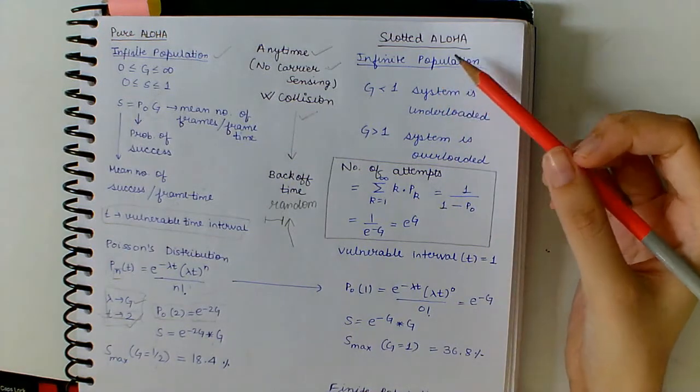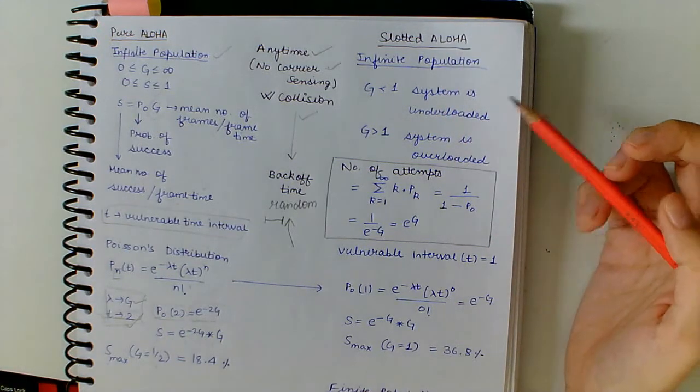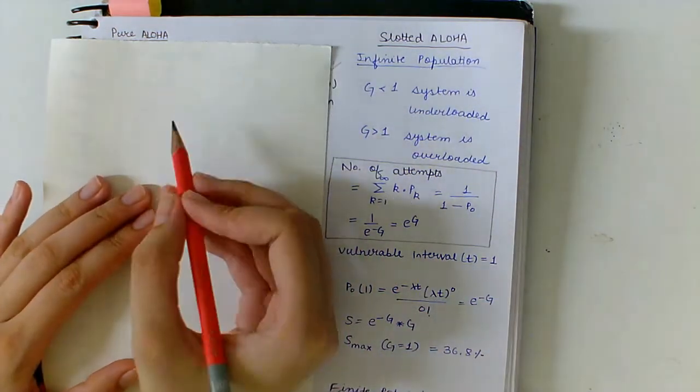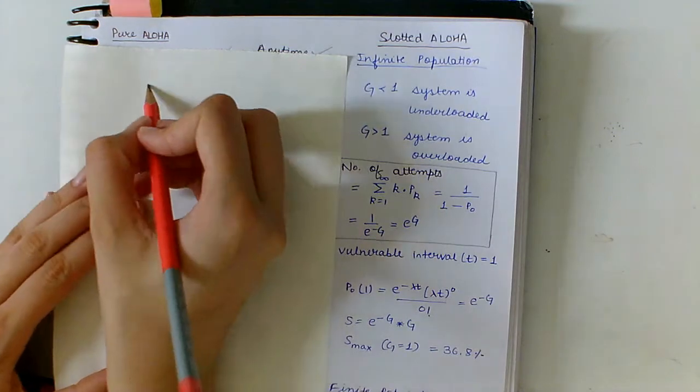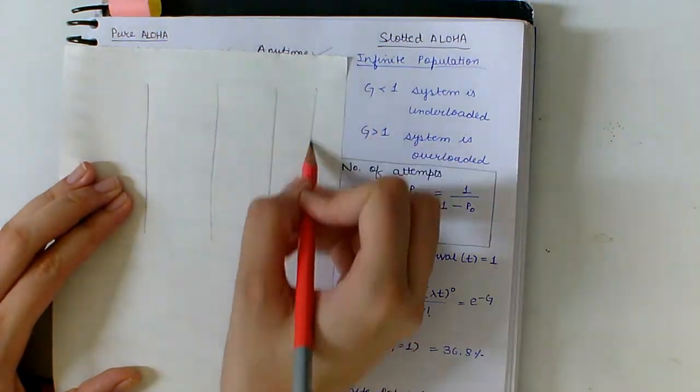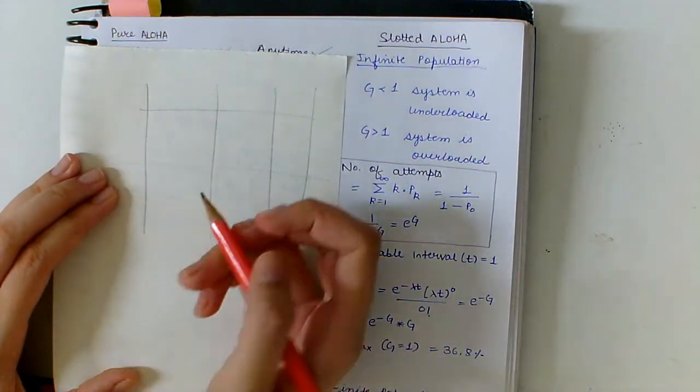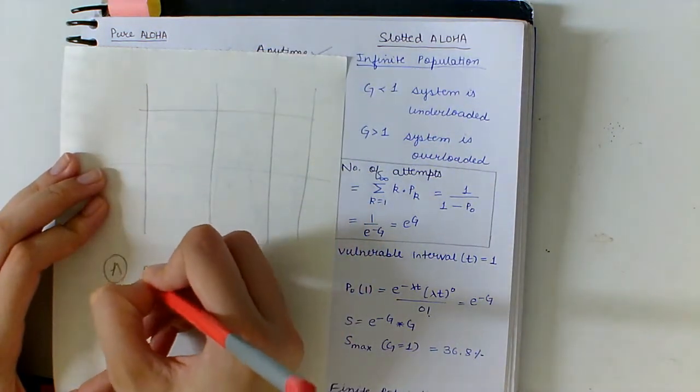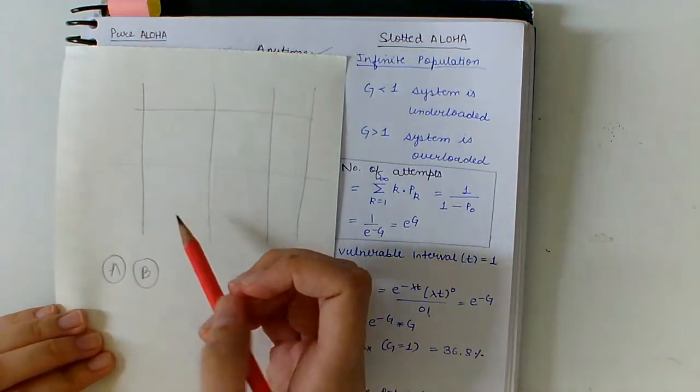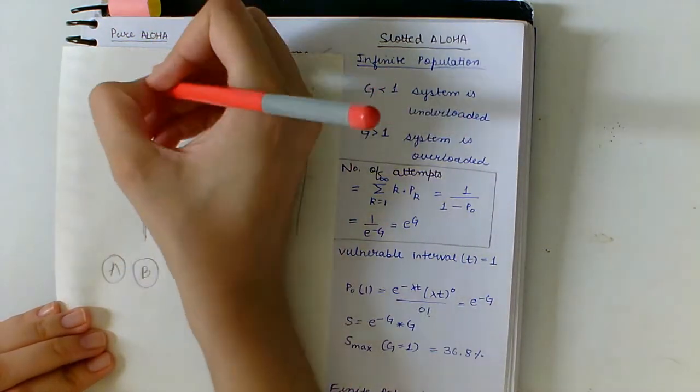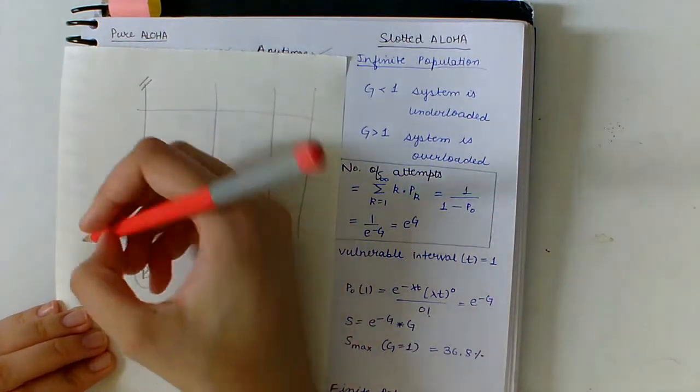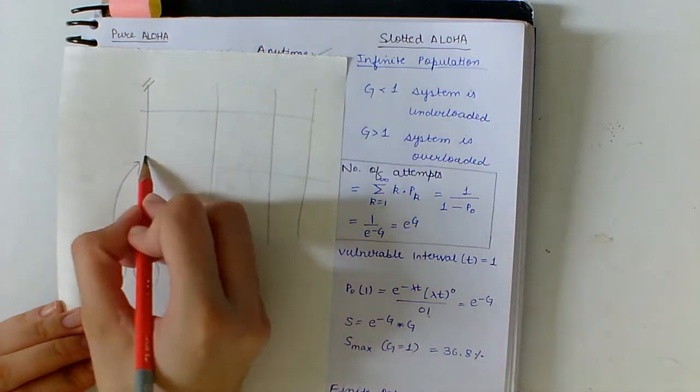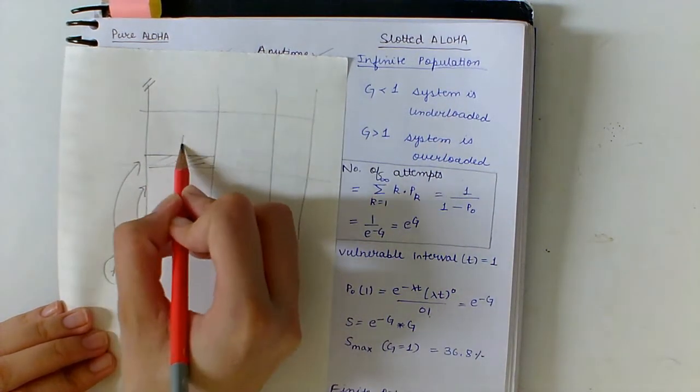Now moving on to Slotted ALOHA. It is similar to Pure ALOHA, just there is one big difference that the time intervals are divided into slots. So if A and B want to transmit at a certain time, they have to wait until a new time interval is started.